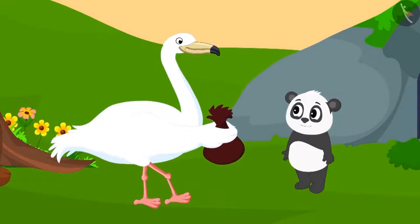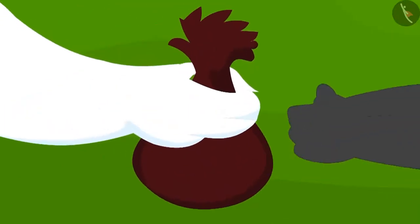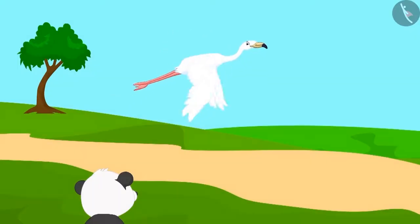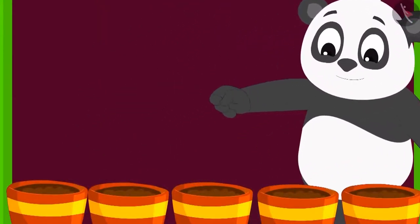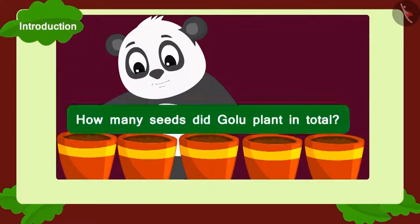The bird recovered and gave some apple seeds to Golu before leaving. Golu planted two seeds each in five pots. Can you tell how many seeds did Golu plant?